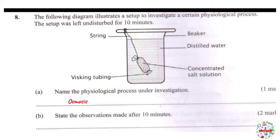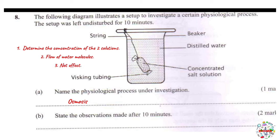We have a concentrated salt solution and distilled water. The concentrated salt solution is hypertonic — it has more solutes and less solvent. Water molecules will always move from the hypotonic solution to the hypertonic solution. So water molecules move from the distilled water across the semipermeable visking tubing into the concentrated salt solution — hypo to hyper.